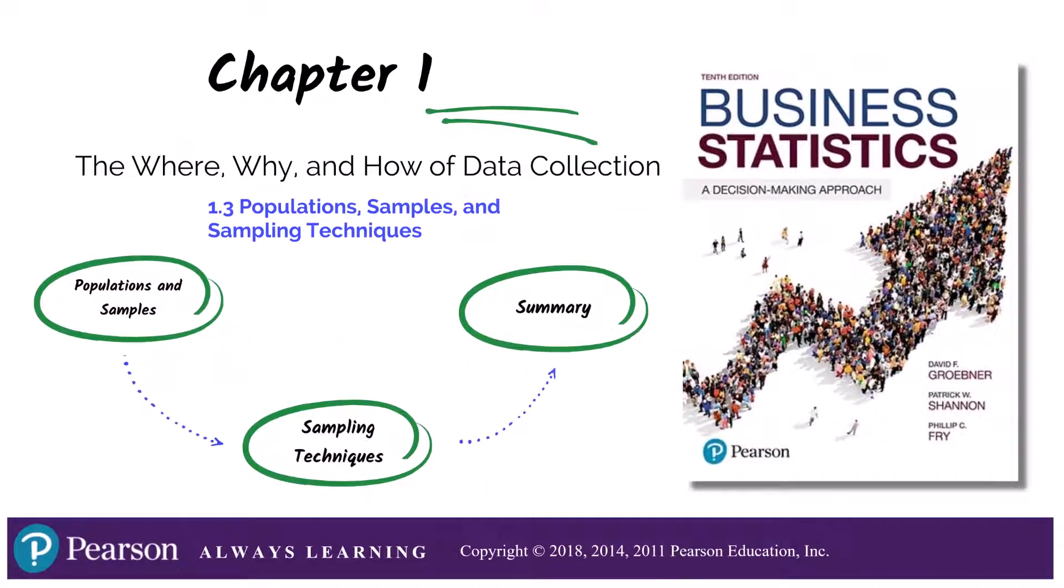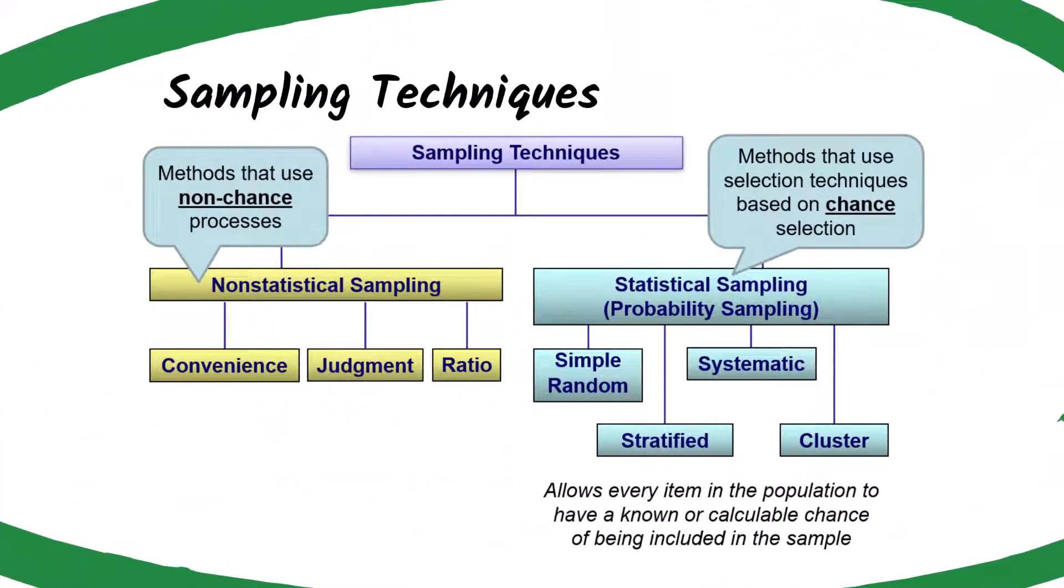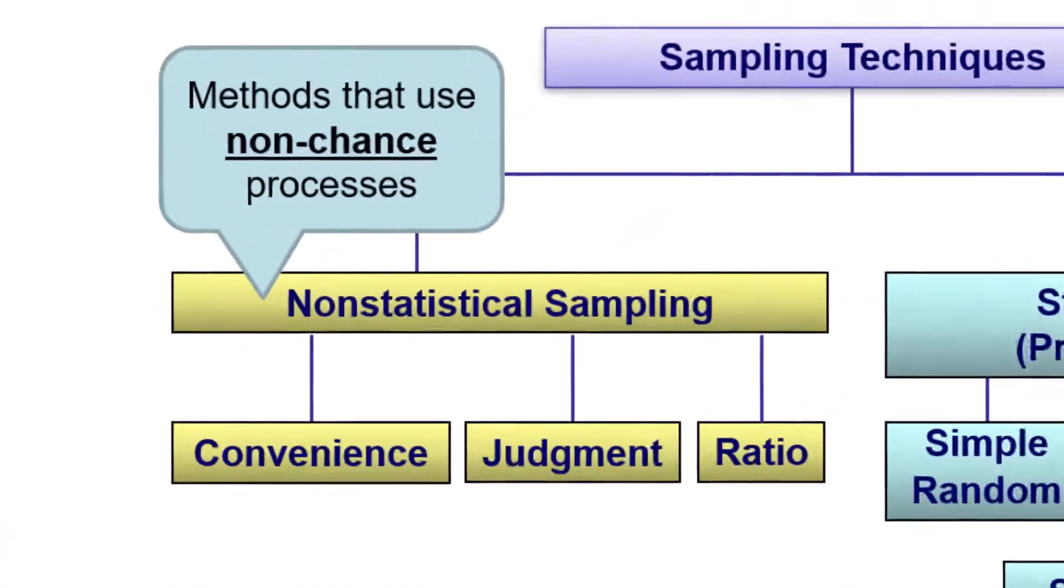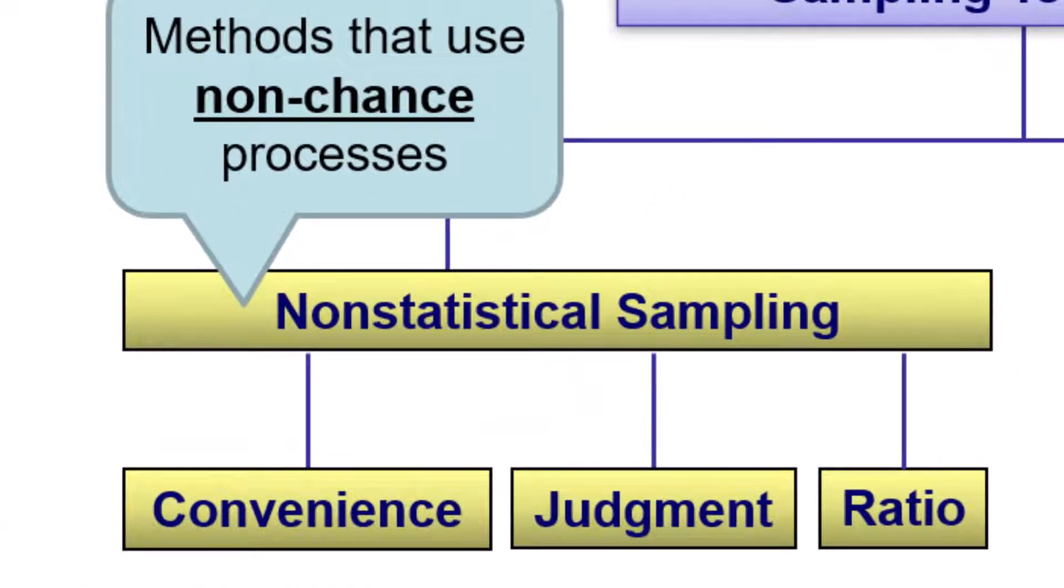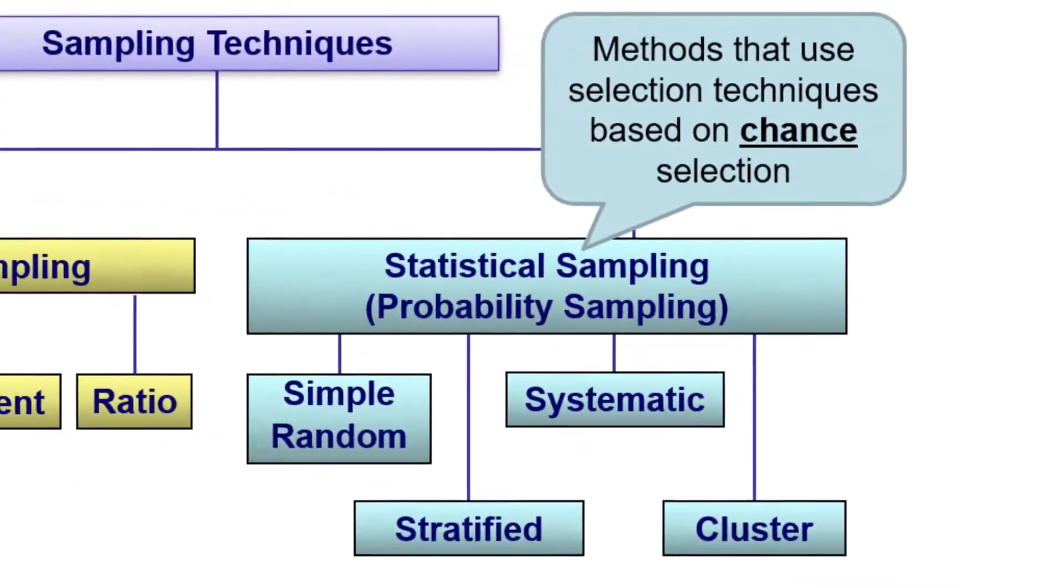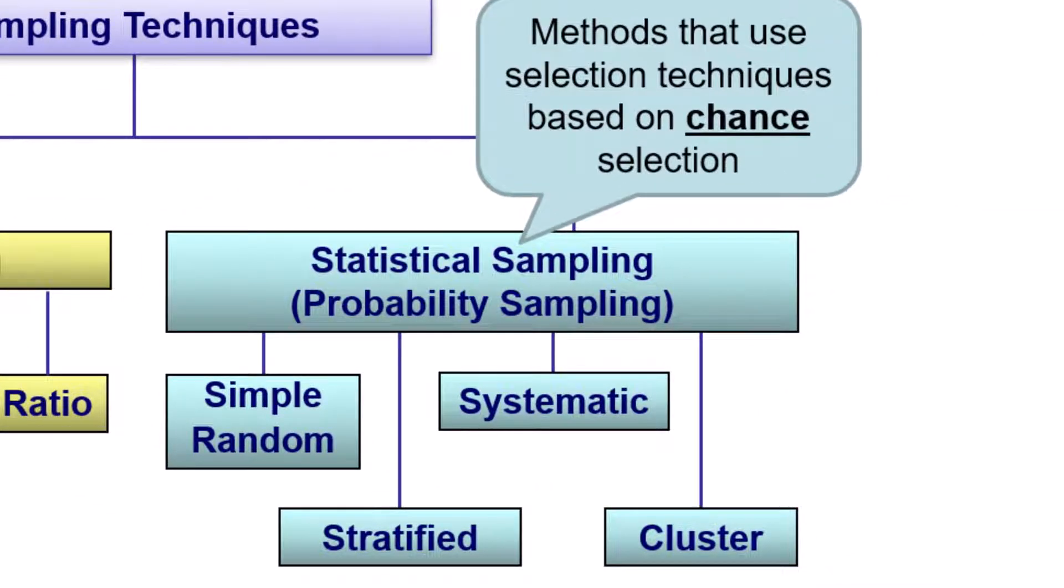Let's now dive into the different sampling techniques. On this slide, this breaks down the different sampling techniques. On the left hand side, we have non-statistical sampling processes. These use convenience, judgment, or other non-chance methods. In this video, we'll be focusing more on the statistical sampling techniques shown here.